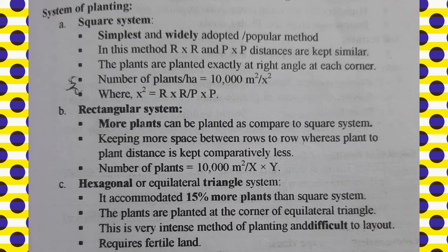Square system is the most easy, widely adopted and popular system. The row-to-row and plant-to-plant distance are kept the same, with exactly a 90-degree angle at each corner. The number of plants per hectare is calculated as 10,000 m² divided by x², where x is the row-to-row or plant-to-plant distance.